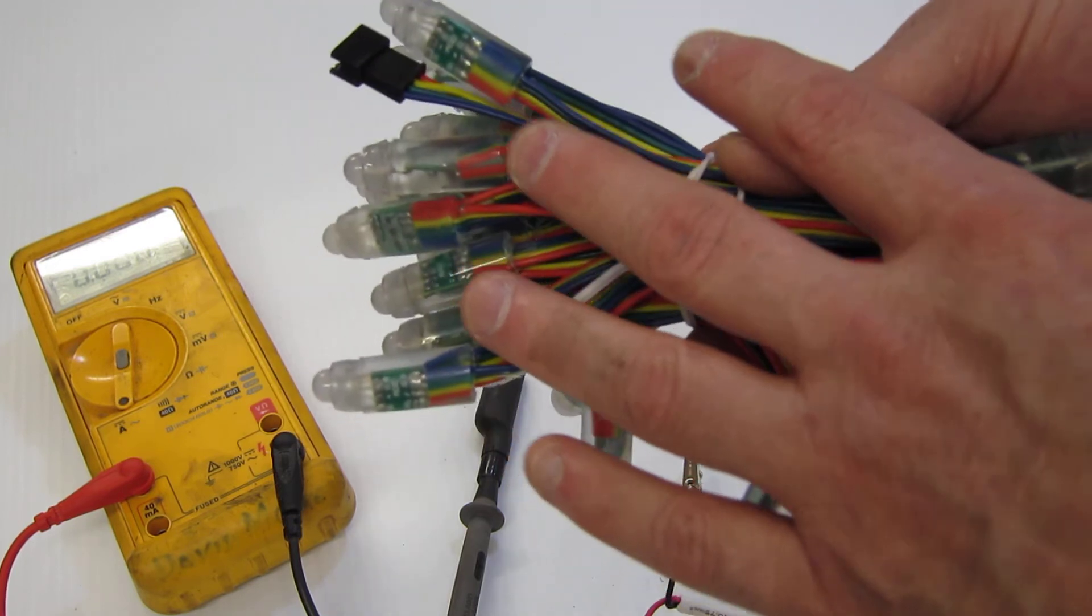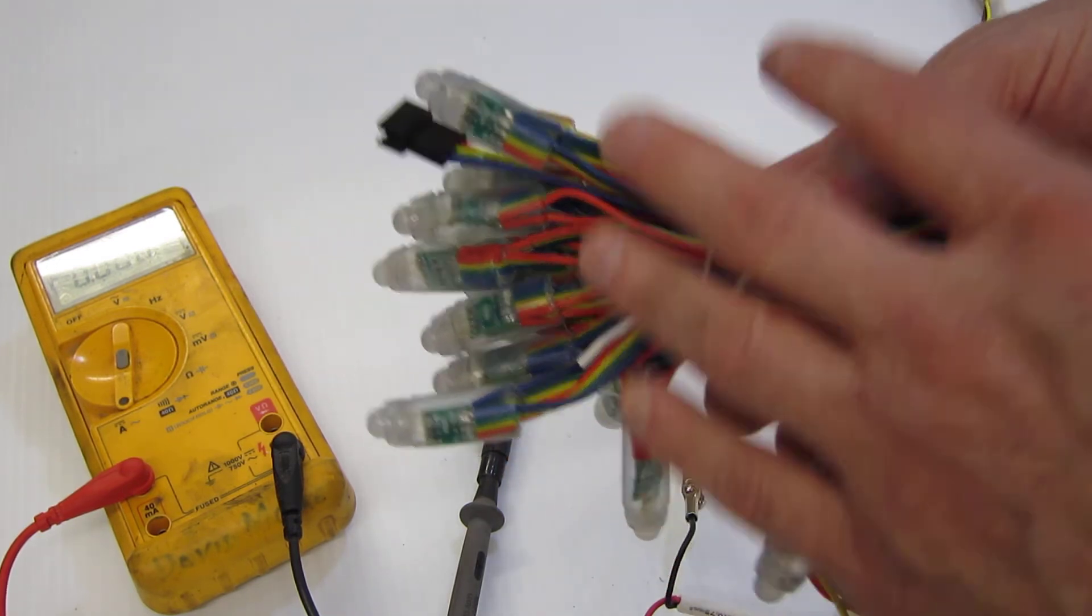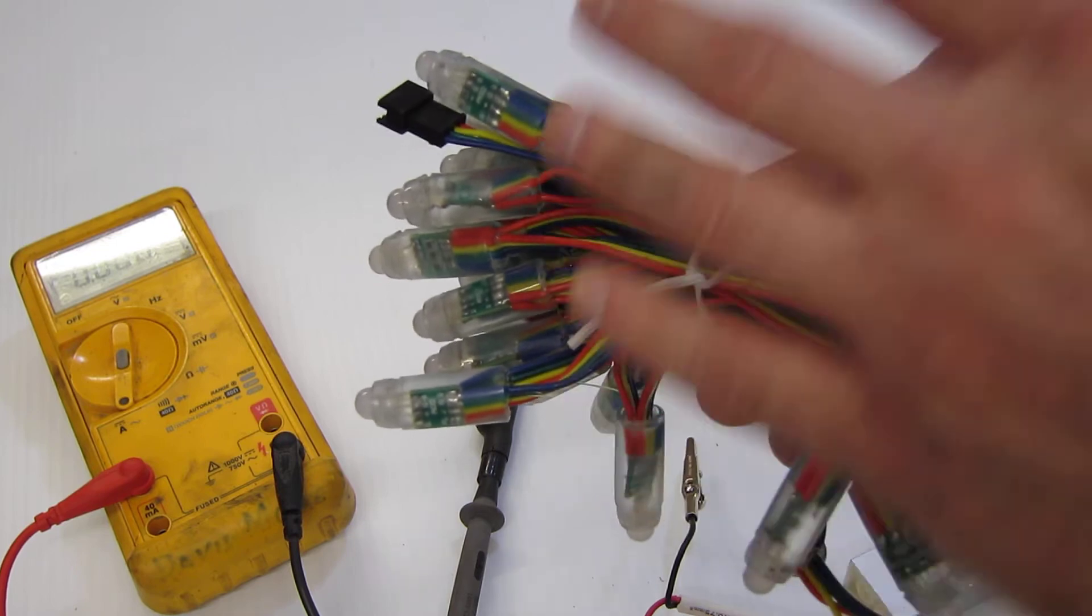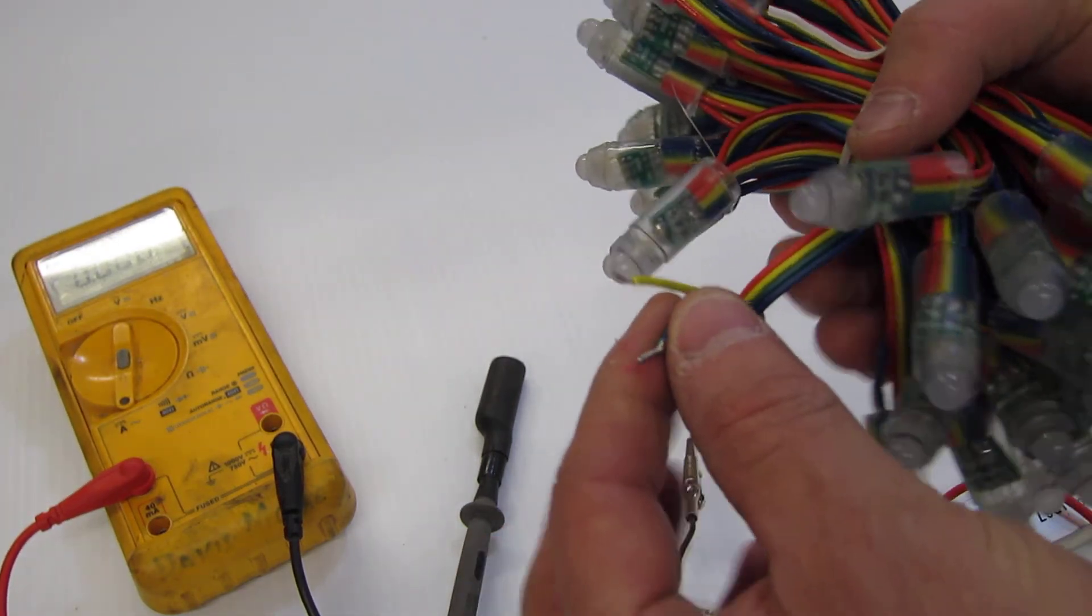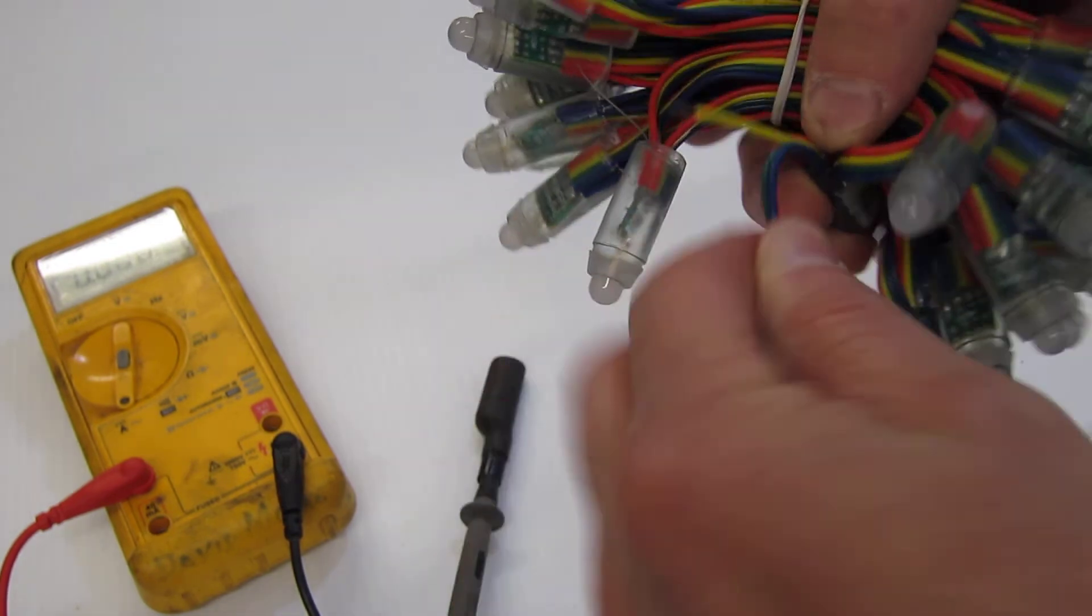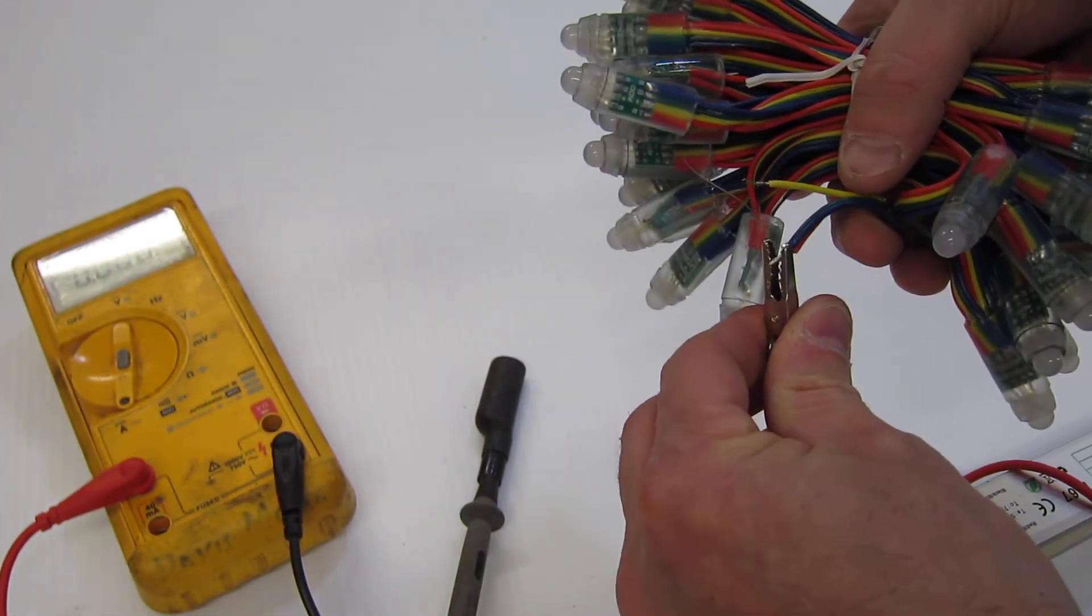We're going to look at the total draw here, and if we were going to hook these up to a controller, we would need to make sure that these were less than six amps, if that controller handled only two amps per channel. So we're going to hook them all together, produce white. We're going to go ahead, hook them up here.